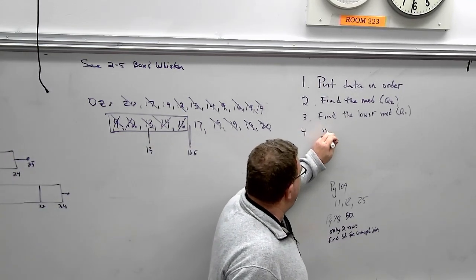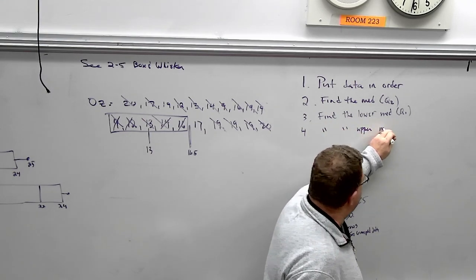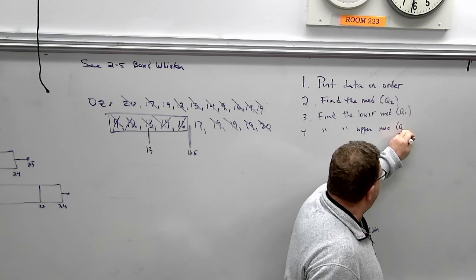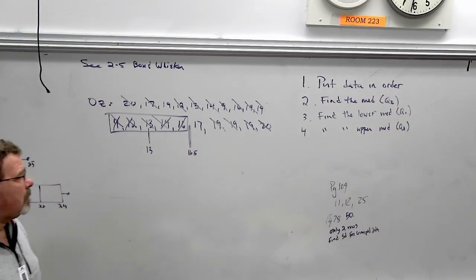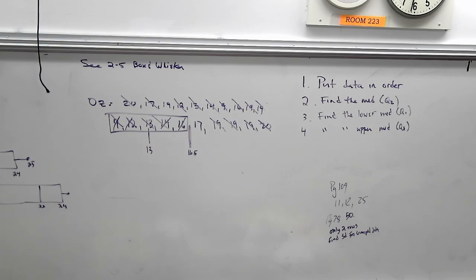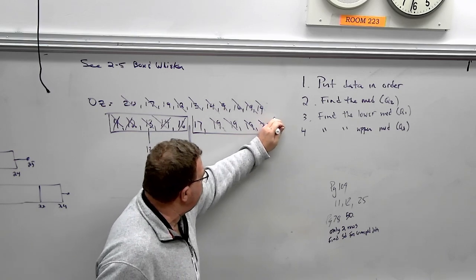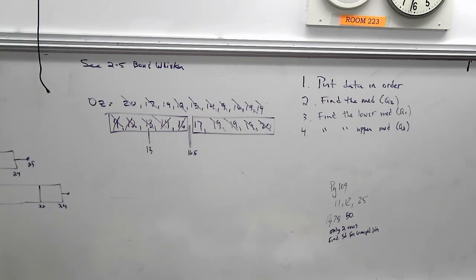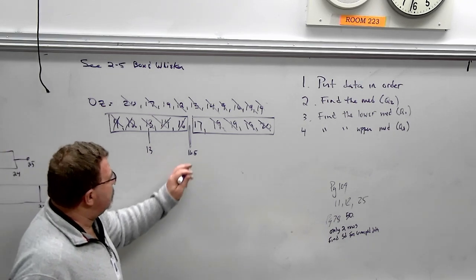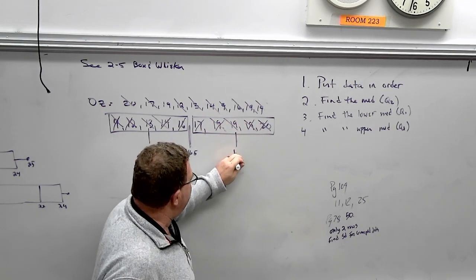Next step. Find the upper median. Q3. Q3. We just do exactly the same thing. The upper median, I put a box around all the numbers greater than 16.5, and I find the median of that. So you see, you're just finding the median three times. So 17, 20, 19, 19. My median is 19.